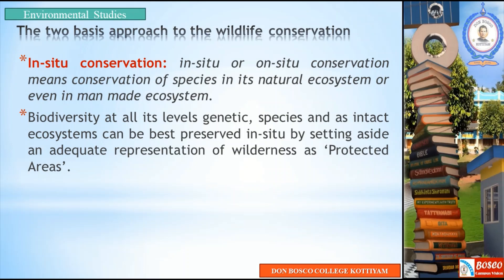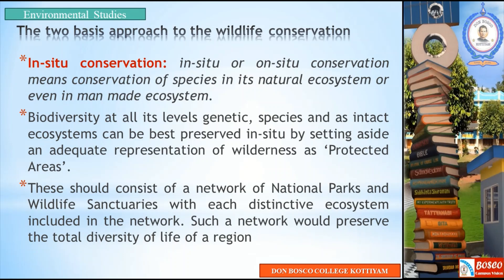Biodiversity exists at three different levels: genetic level, species level, and ecosystem level. In-situ conservation involves protected areas and conserved areas, forming a network of natural parks and wildlife sanctuaries, with each distinct ecosystem included in the network. Such a network would preserve the total diversity of life of a region, protecting all species and ecosystems.